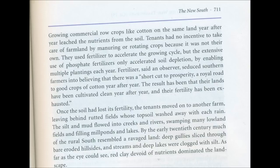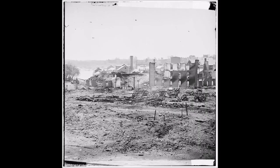The book continues: 'Once the soil had lost its fertility the tenants moved on to another farm, leaving behind rutted fields whose topsoil washed away with each rain. The silt and mud flowed into creeks and rivers, swamping many lowland fields and filling mill ponds and lakes. By the early 20th century, much of the rural south resembled a ravaged land — deep gullies sliced through bare eroded hillsides, and streams and lakes were clogged with silt; as far as the eye could see, red clay devoid of nutrients dominated the landscape.' That sounds to me like a mass inundation of dirt and soil, with the official story explaining it away as over-fertilization — covering up the mud flood incident.